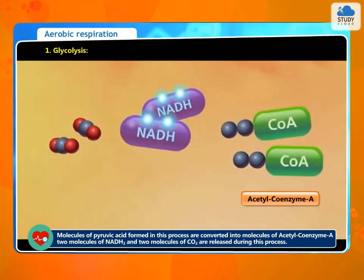Molecules of pyruvic acid formed in this process are converted into molecules of acetyl coenzyme A. Two molecules of NADH2 and two molecules of CO2 are released during this process.